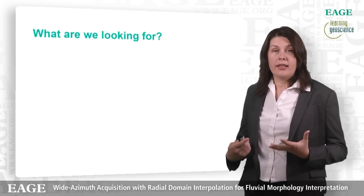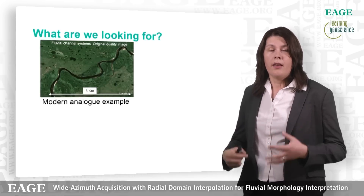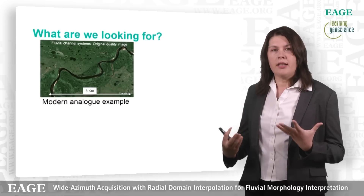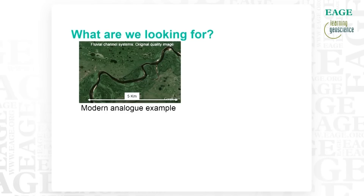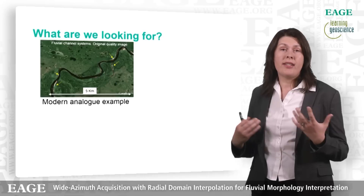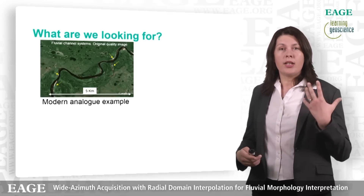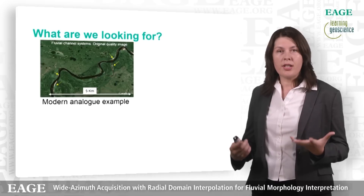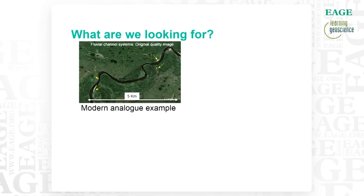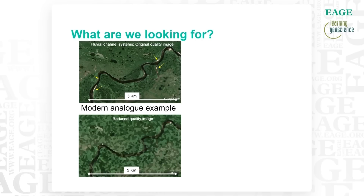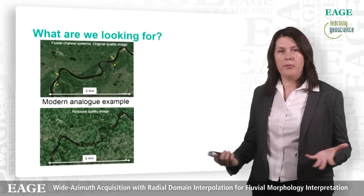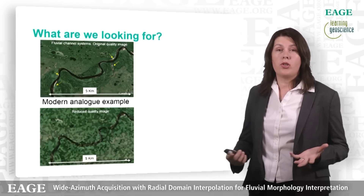Using the primary target as an example, let's look at what we are looking for. The main target is fluvial channel systems — a reasonably large target. What we are really interested in are those small white sand bodies, which are basically the sand banks that will create very good quality reservoir. We will need quite high quality imaging to be able to find those small features within the main fluvial channel system. If we reduce the resolution, we can still see the main body of the fluvial system but we lose all the details.